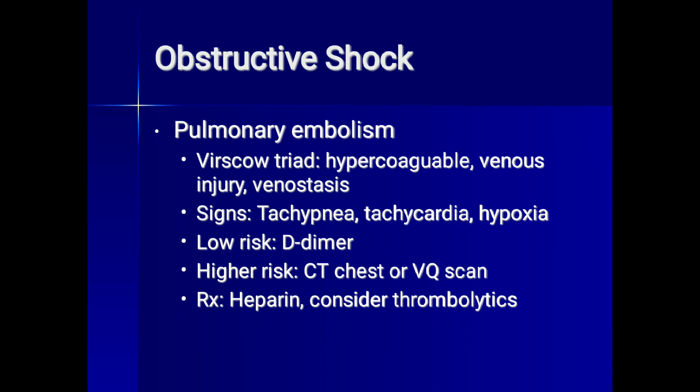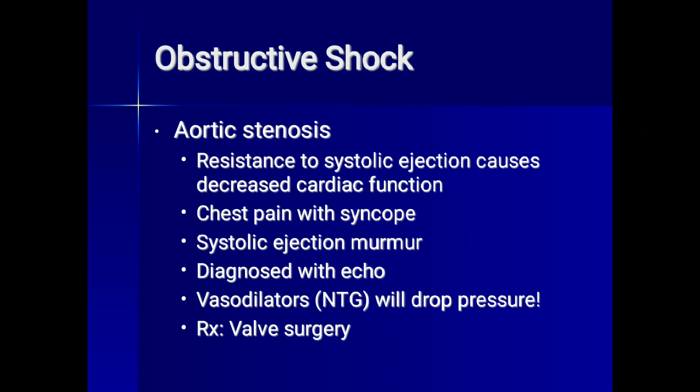Pulmonary embolism risk factors include hypercoagulable states, venous injury, and venous stasis. Signs include tachypnea, tachycardia, and hypoxia. Low-risk patients with positive D-dimer, higher-risk patients get CT chest or V/Q scan. Treatment is heparin and consider thrombolytics. Aortic stenosis causes resistance to systolic ejection, decreased cardiac function, chest pain with syncope, and a systolic ejection murmur. Diagnosis is by echo; vasodilators will drop blood pressure, so treatment is valve surgery.